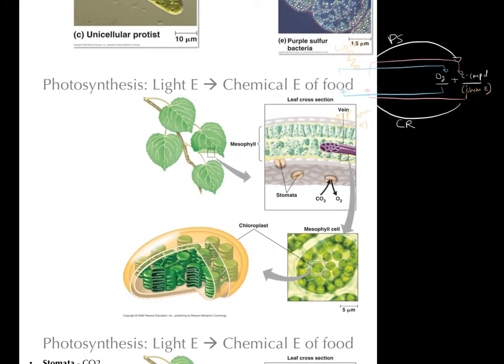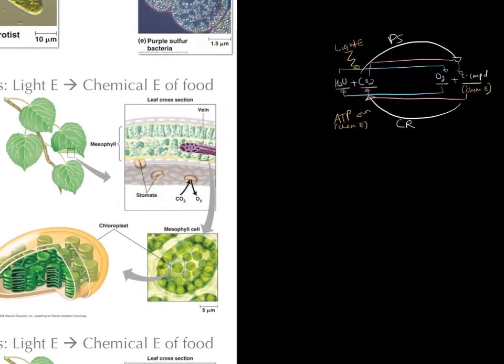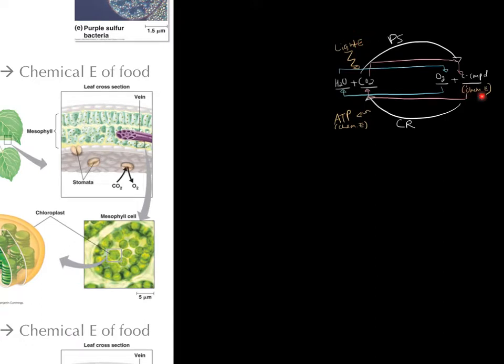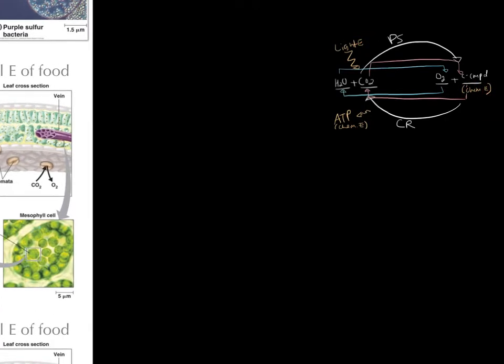Remember, overall it's converting light energy to chemical energy of food. Let's start by looking at chloroplast structure in more detail.